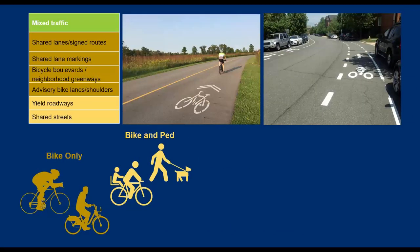This table shows examples from each of these four different facility types. It's color-coded: the mustard yellow color shows options that are only for bicyclists, like shared lanes, signed routes, shared lane markings, neighborhood greenways or boulevards, and advisory bike lanes or shoulders.